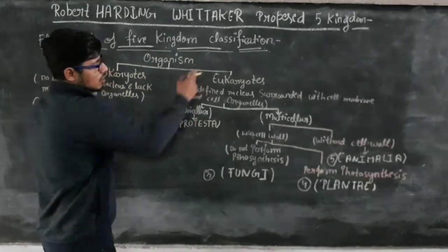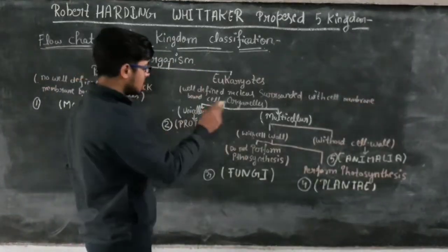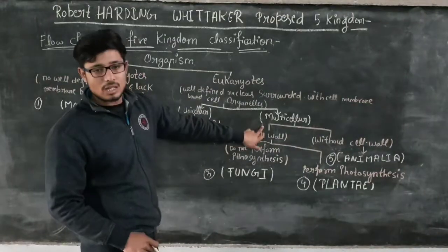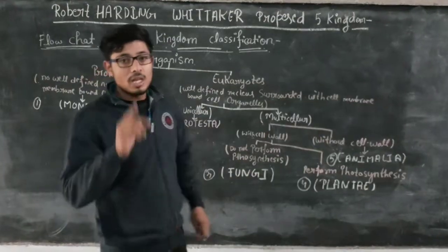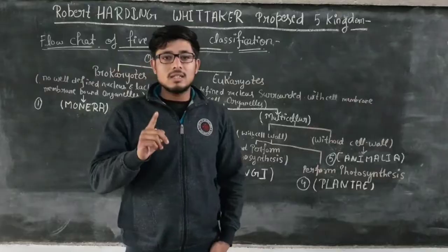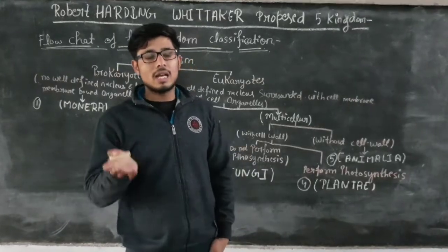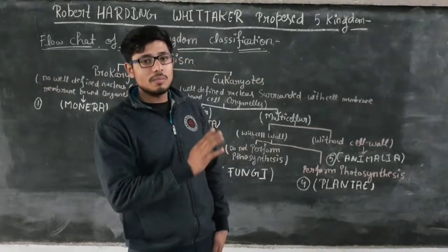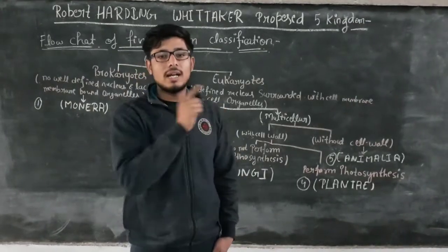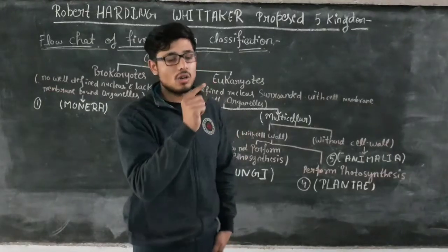The Eukaryotic Organism is divided into two parts: Unicellular Organism and Multicellular Organism. Unicellular means Single Cell Organism. Unicellular means Single Cell Organism and Multicellular means more than one kind of cell. That includes the group of Multicellular Organism.